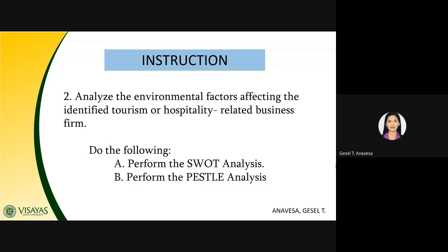Strengths and Weaknesses are internal factors, so you have to look at the internal factors of the firm — for example, employees, physical facilities, suppliers and distributors, and others. Opportunities and Threats come from external factors that the organization doesn't have control over, but can act upon. When you analyze opportunities and threats, you can refer to the PESTLE analysis — Political, Economic, Social, Technological, Legal, and Environmental. You can look at opportunities and threats regarding PESTLE factors, as well as the task environment, which is also part of the external environment.